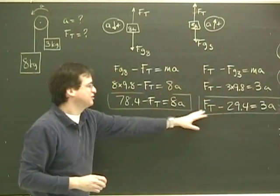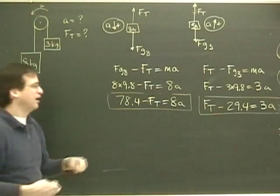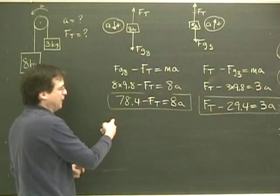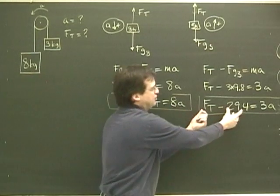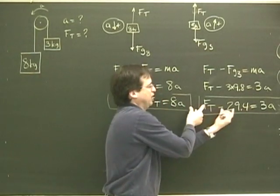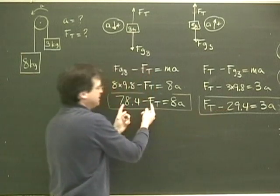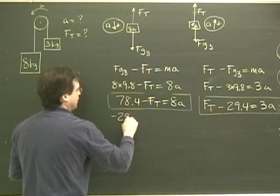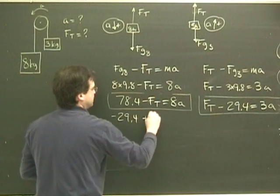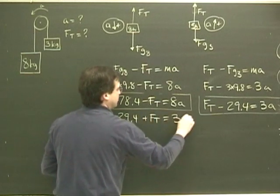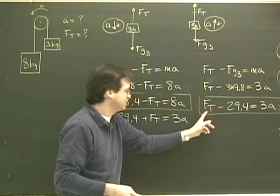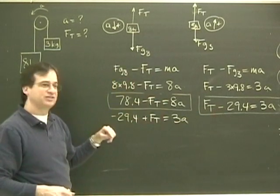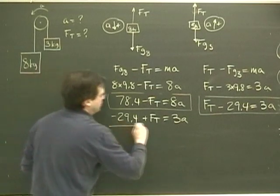So what I can do is I can take the two equations, put them together, and solve for the acceleration. So I'm going to bring this box down over to here and line up the two equations. But when I do that, I'm going to take the negative 29.4, move it over here, and put the Ft over here. So basically I'm lining up the tension. So it's going to be negative 29.4 plus Ft equals 3a. I haven't changed the sides on anything. This is still negative. This is still positive. Negative and positive. But see, now I've got my two equations lined up.